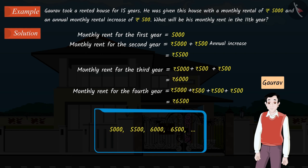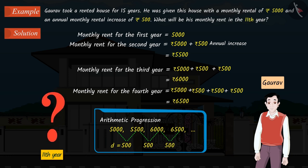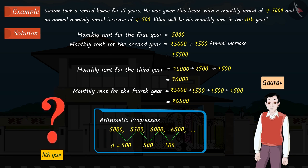If we observe carefully, we can see a pattern here. Can you tell me whether this is an arithmetic progression or not? This is an AP. We have to find the monthly rent for the 11th year. Tell me what will we do to find the value for the 11th year.